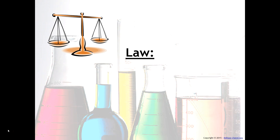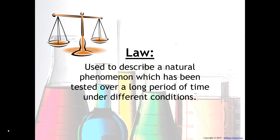You may ask: what does a law have to do with this, and what's the difference between a theory and a law? A law is used to describe a natural phenomenon that has been tested over a long period of time under different conditions. A law is a very simple statement — for example, what goes up must come down, the law of gravitation, Newton's laws: for every action force there's an equal and opposite reaction. These are very simple statements that don't seek to explain what's going on but simply describe something that is inevitable, something that is going to happen no matter what.